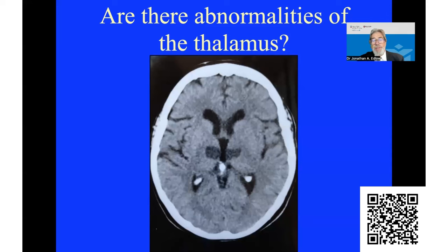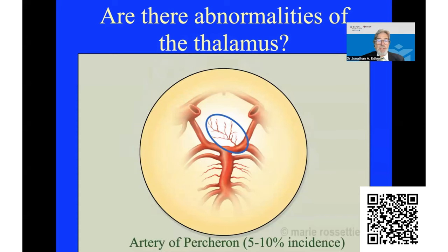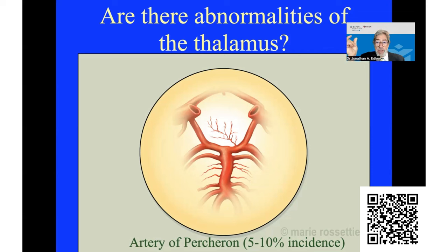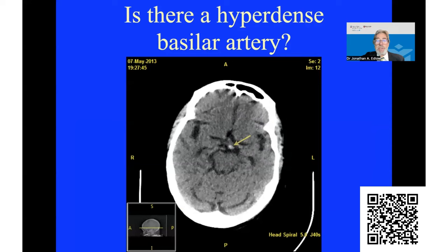Are there abnormalities of the thalamus? This delayed CT scan shows what's called an artery of Percheron stroke, with bilateral thalamic strokes. About 5 to 10% of patients will have a single unilateral artery coming off the first segment of the posterior cerebral artery — the artery of Percheron. Most people have a vessel on both sides, so a small vessel infarct only knocks off one side of the thalamus. But patients with an artery of Percheron who get a small vessel infarct can knock out the entire thalamus and present with instant coma. Is there a hyperdense basilar artery? This is a sign to look for in a comatose patient suggestive of basilar artery thrombosis.